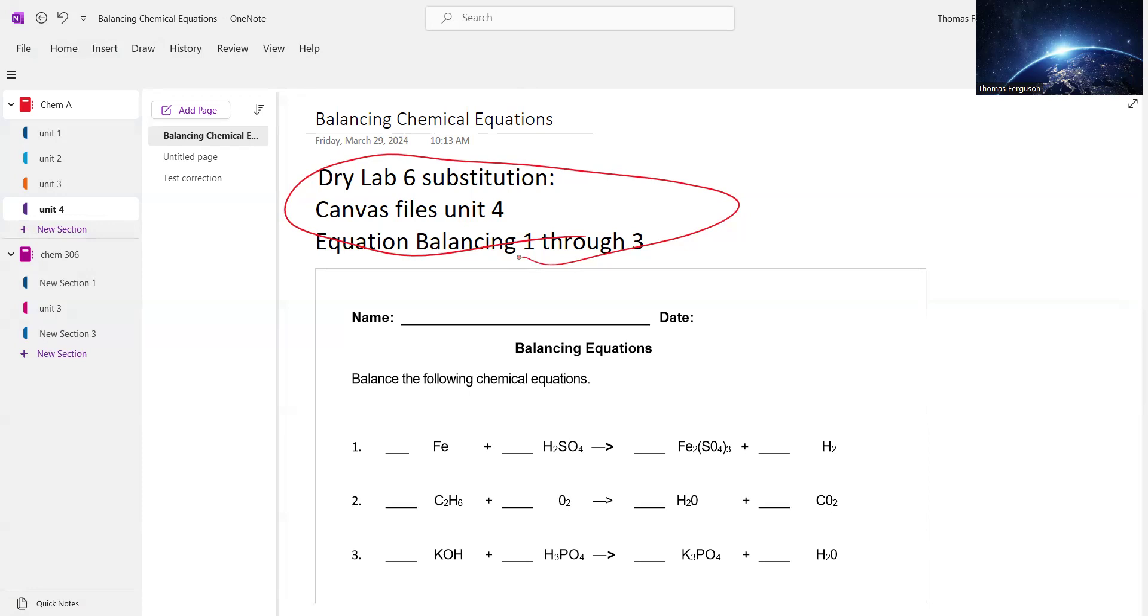Don't do the dry lab in your packet. Do these three worksheets instead. Submit them as one PDF though under the dry lab six assignment. If you want to do the dry lab afterwards, dry lab six, for extra credit, I'll give you extra credit for that. But do these first though. These are the ones you're getting points for. But these are much more straightforward than that one.